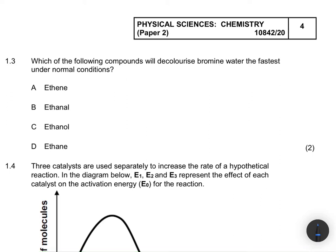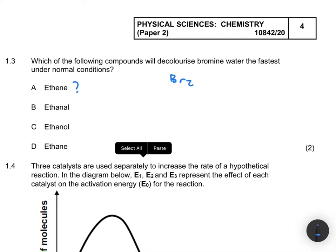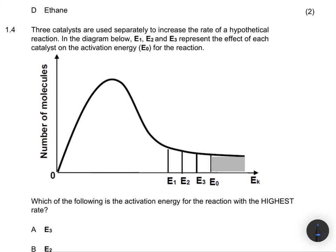Question 1.3 asks which compound will decolorize bromine water the fastest under normal conditions. Bromine water is a solution of Br₂. Option A says ethene — we know ethene is unsaturated, so it can easily react with Br₂. Option B, ethanol, cannot easily react because it is saturated, and the same applies to ethane. So the compound that will decolorize bromine water fastest is ethene, because it is unsaturated and will readily react.